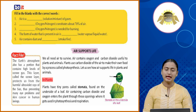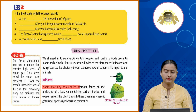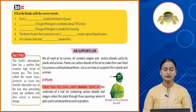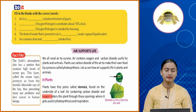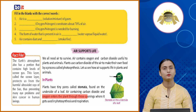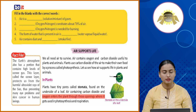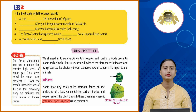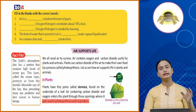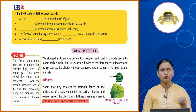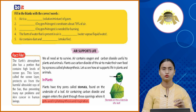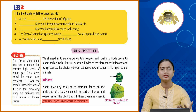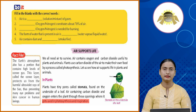In plants: plants have tiny pores called stomata found on the underside of a leaf. Air containing carbon dioxide and oxygen enters the plant through these openings, where it gets used in photosynthesis and respiration. So the carbon dioxide present in the air enters through stomata and is used for both respiration and photosynthesis.